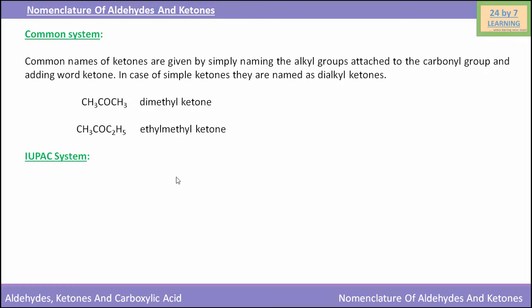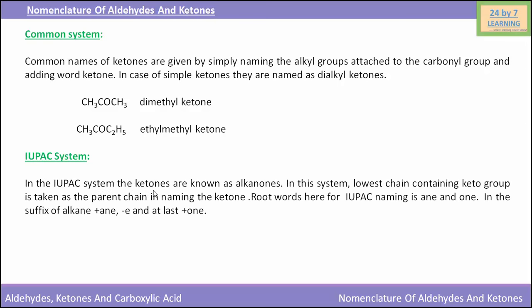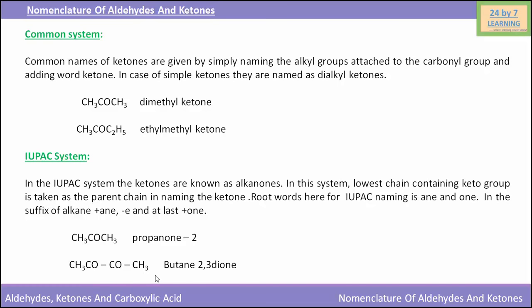Now we will see the nomenclature of ketones in the IUPAC system. In the IUPAC system, ketones are known as alkanones. The longest chain containing the keto group is taken as the parent chain. The root word uses the suffix 'an' replacing the 'e' of the alkane, and 'one' is added at the end. For example, CH3COCH3 is named as propan-2-one, and CH3COCOCH3 is named as butane-2,3-dione, since two keto groups are present, hence the suffix 'dione'.